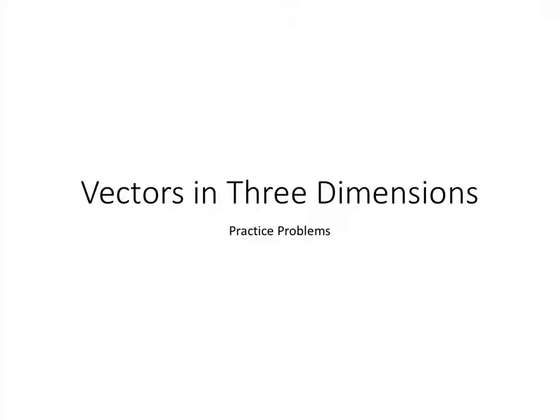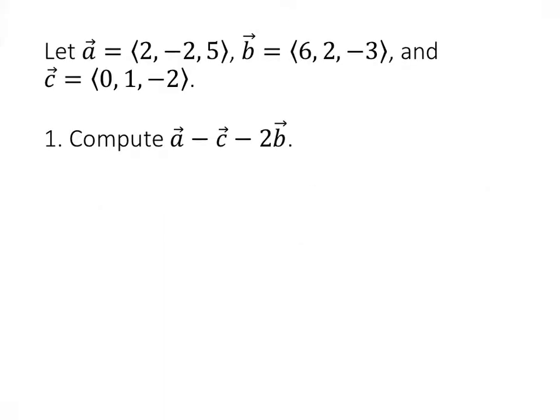This video contains the solutions to the vectors in three dimensions practice problems. For this first problem, we're given three vectors: A = (2, -2, 5), B = (6, 2, -3), and C = (0, 1, -2), and we're asked to compute this combination of those vectors.